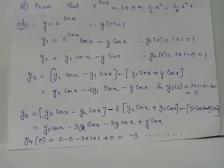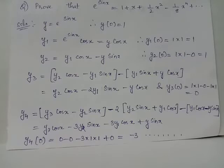y1 is the derivative of y, obtained as e raised to sin x into the derivative of sin x, which is cos x. Therefore y1 equals e raised to sin x into cos x. Replacing e raised to sin x using y, we have y1 equals y cos x. The value of y1 at x equals 0 is e raised to 0 into cos 0, which is 1 into 1, which is 1.